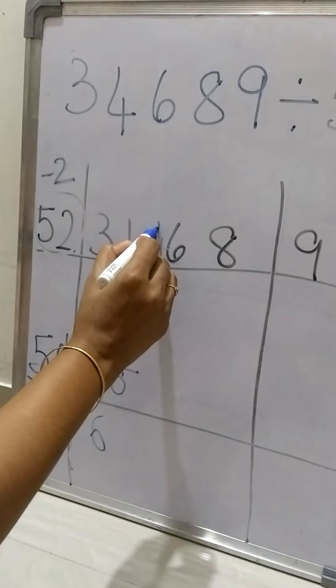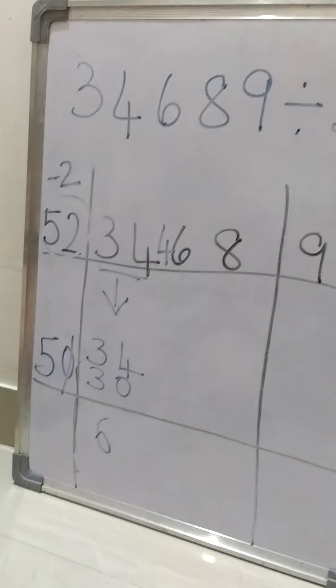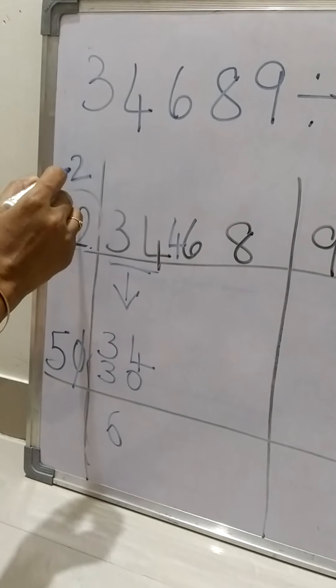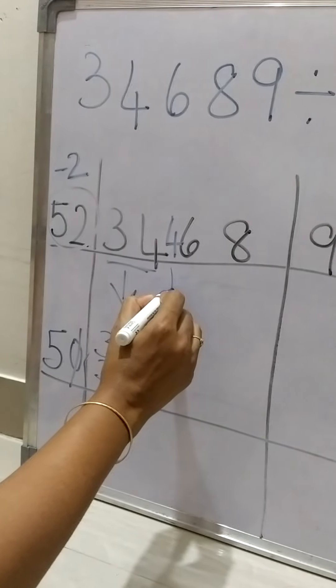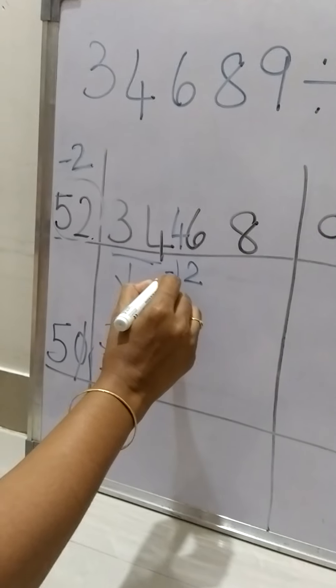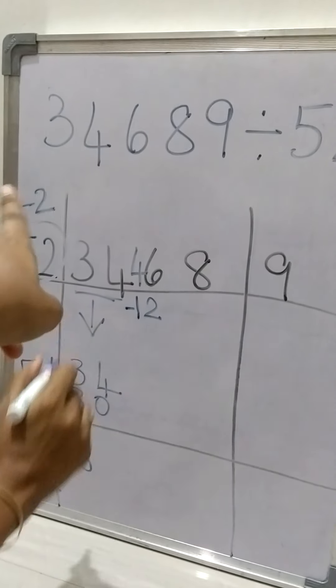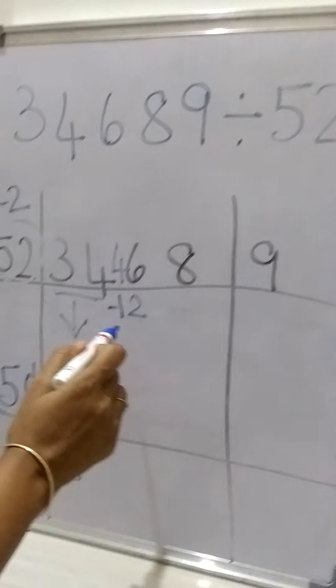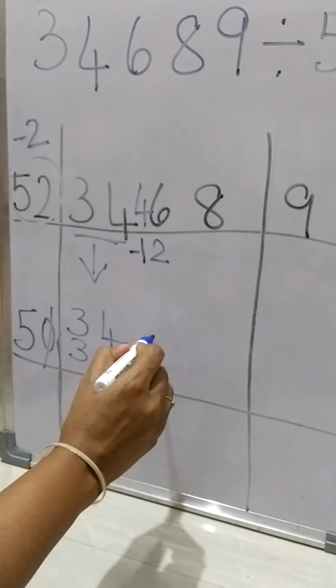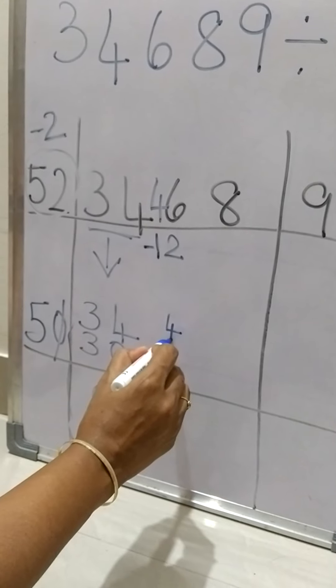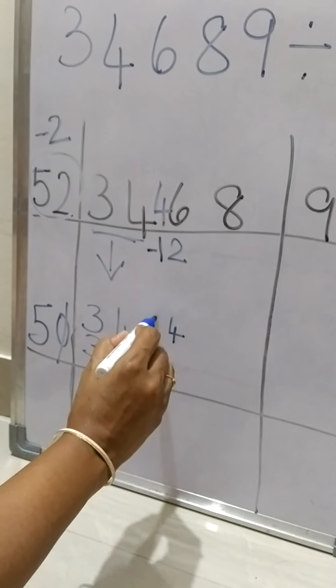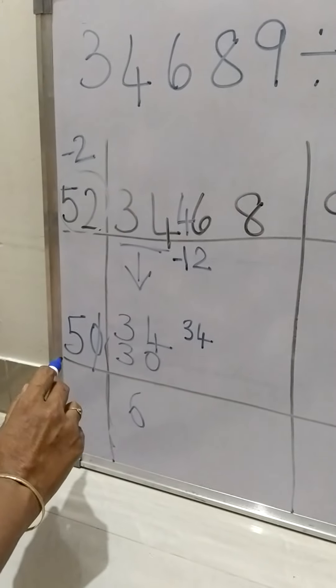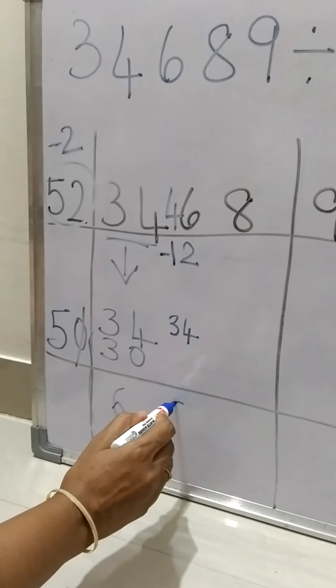So we are going to get 4, so it will become 46, our answer. Now we need to do 6 multiplied by 2, that is 12. This is multiplication because we got minus 2, right? So we need to minus here. So 6 minus 2 is 4, 4 minus 1 is 3.